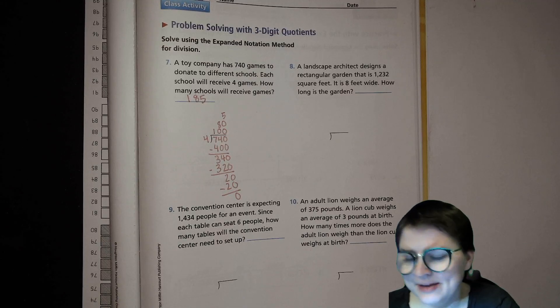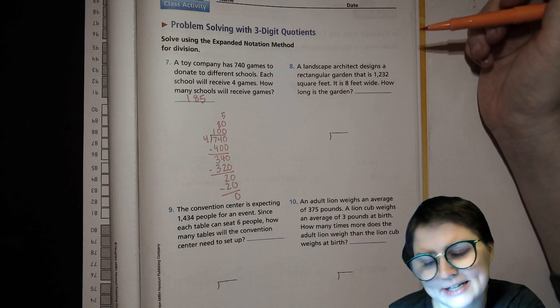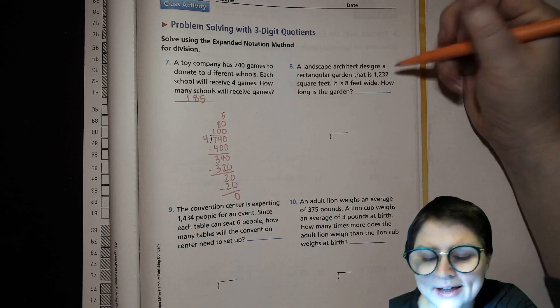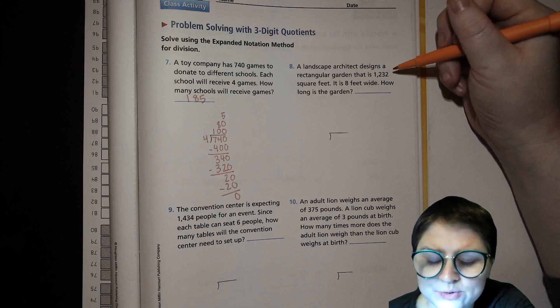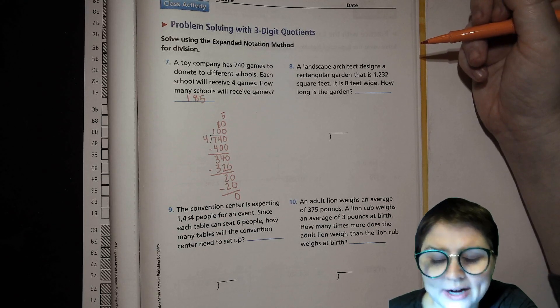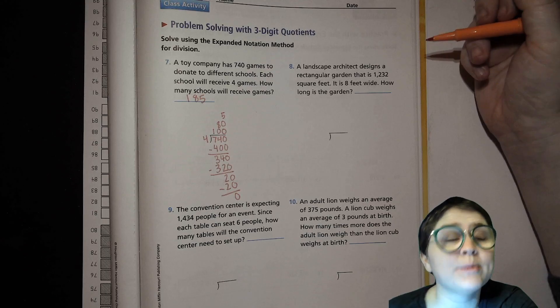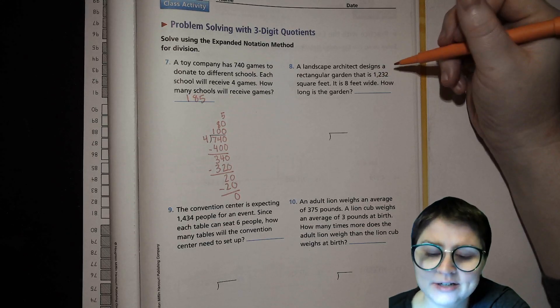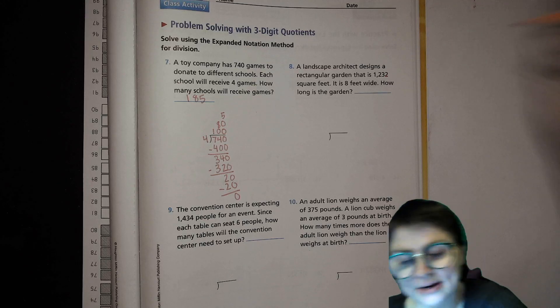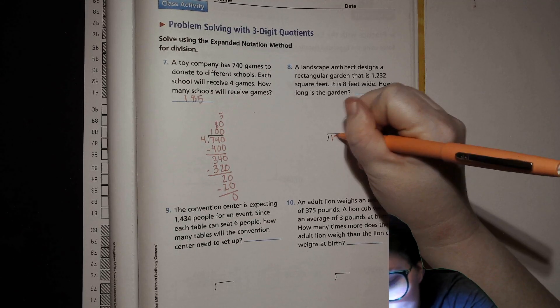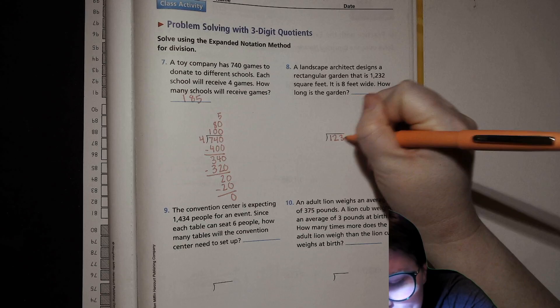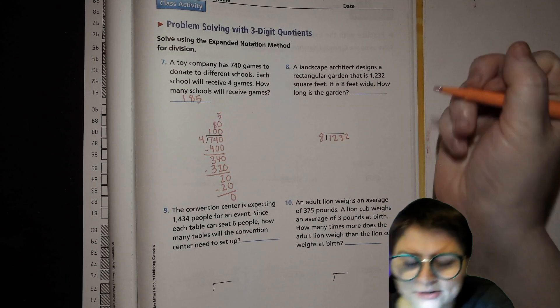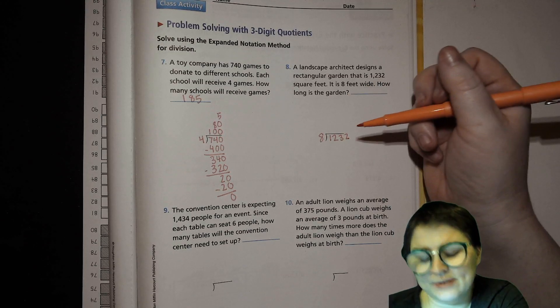Let's do this next one. A landscape architect designs a rectangular garden that is 1,232 square feet. It is 8 feet wide. How long is the garden? Well, we know length times width will give us the area. So the area divided by the width will give us the length. So, 1,232, 8 over there.